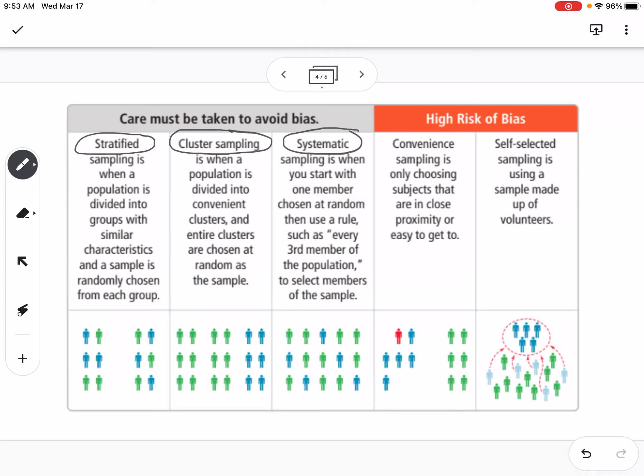Those are ways to avoid bias. The other two are high risk of bias. One is convenience sampling. Convenience sampling is only choosing subjects that are in close proximity or easy to get to. And then self-selected sampling. That's when people volunteer themselves to be part of the sample.